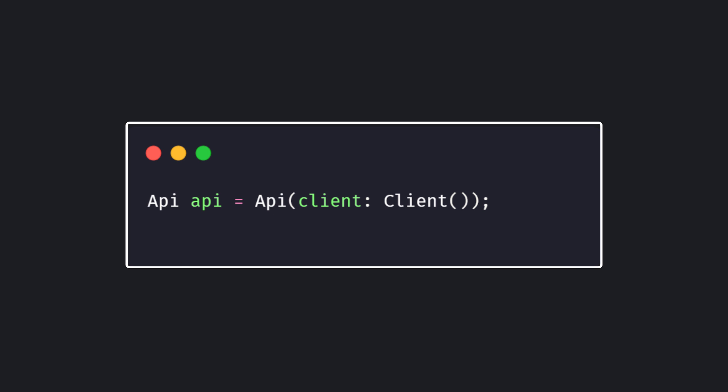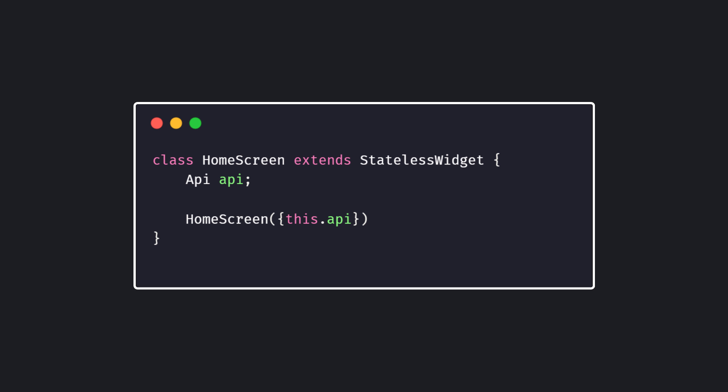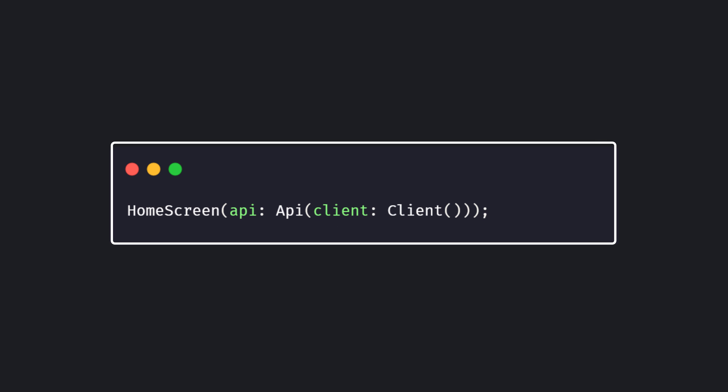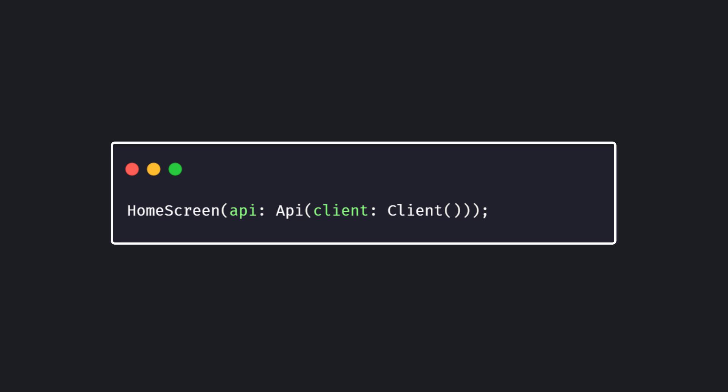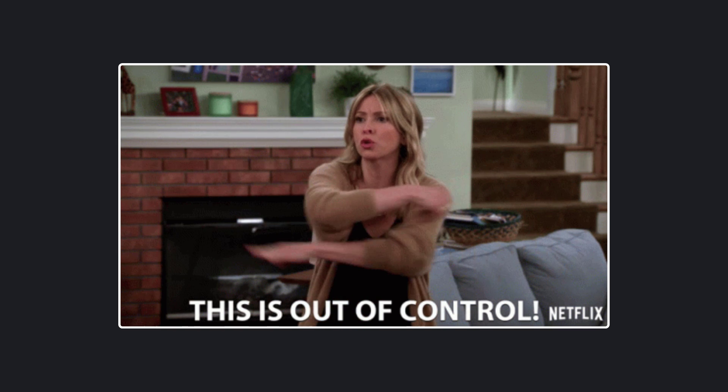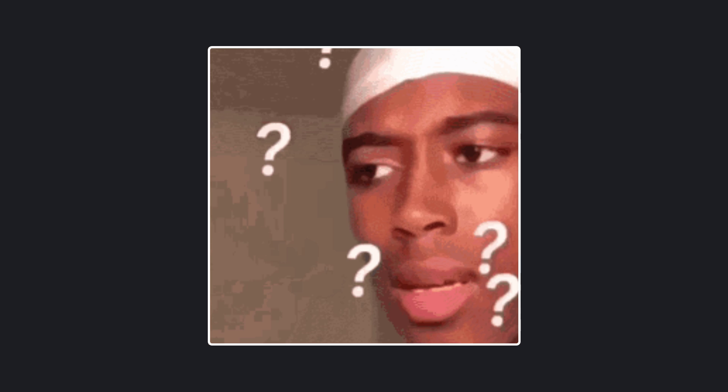This way, when you need the API class somewhere else in your codebase, you would have to pass in the Client class. Now in a situation where we also use dependency injection where the API class is needed — to call HomeScreen somewhere in the codebase — we would pass in the API class it depends on, and also pass in the Client class that the API class depends on. I'm sure we can see how things can easily get out of hand when we try to access classes with multiple dependencies across multiple places.